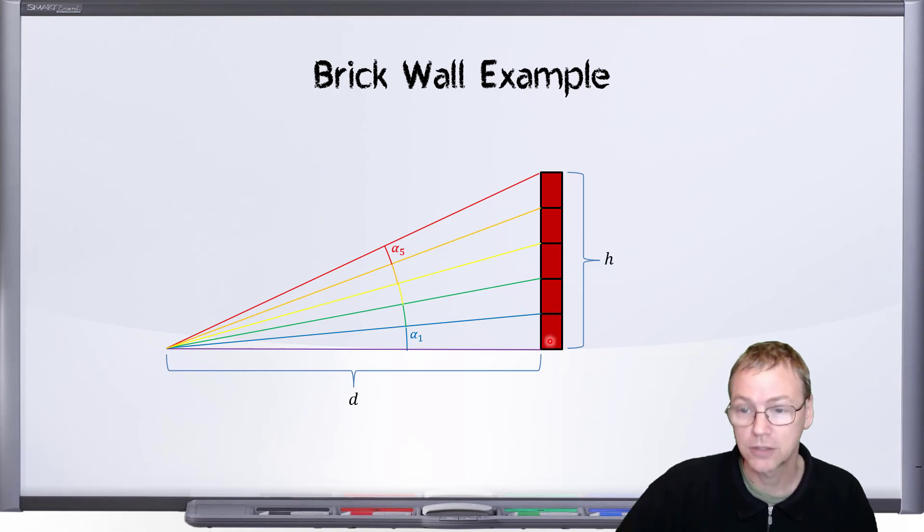The individual bricks being the same size will give us alphas of approximately the same, although you will note that this angle is slightly smaller than this angle down here.